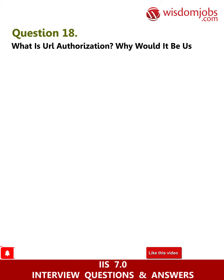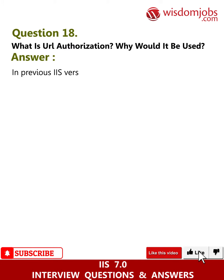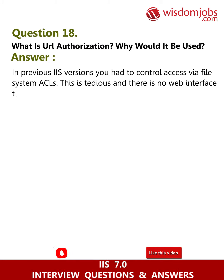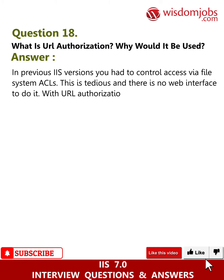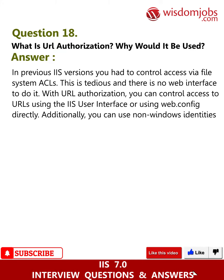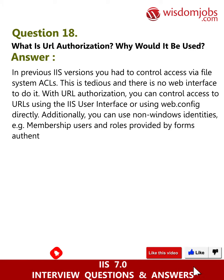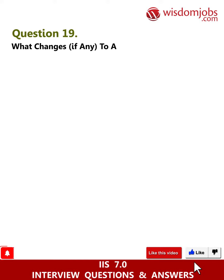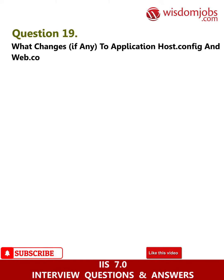Question 18: What is URL Authorization and why would it be used? Answer: In previous IIS versions, you had to control access via file system ACLs, which is tedious and has no web interface. With URL Authorization, you can control access to URLs using the IIS user interface or web.config directly. Additionally, you can use non-Windows identities, for example membership users and roles provided by Forms Authentication.